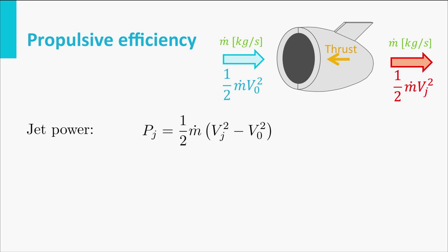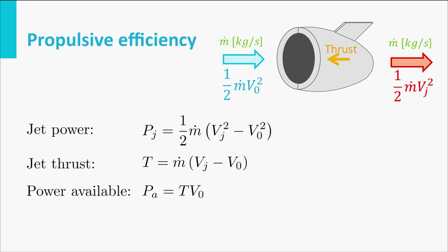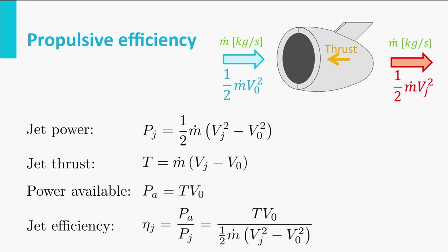The jet power is not the same as our propulsive power. The propulsive power — the power available for propulsion — has a different equation derived earlier: it's the thrust times the speed. The thrust is generated by the mass flow times the speed difference. This allows us to calculate the jet efficiency by dividing the propulsive power by the jet power, giving us T times V zero, divided by half m dot times (V_j squared minus V zero squared).